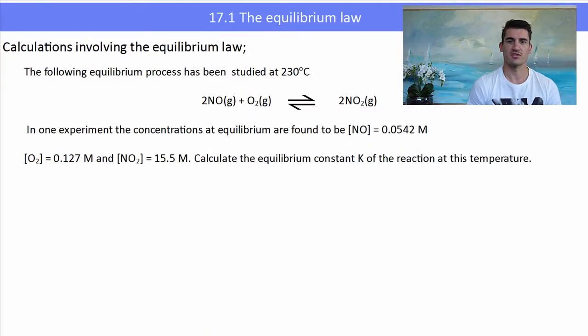The following equilibrium process has been studied at 230 degrees: 2NO(g) + O₂(g) ⇌ 2NO₂(g). In one experiment, the concentrations at equilibrium are found to be [NO] = 0.0542 M, [O₂] = 0.127 M, and [NO₂] = 15.5 M. Calculate the equilibrium constant at this temperature.